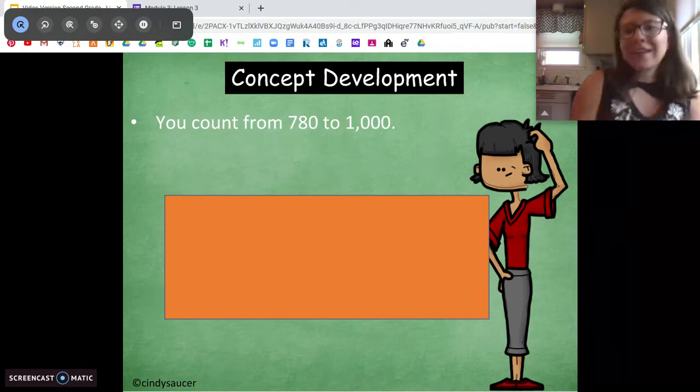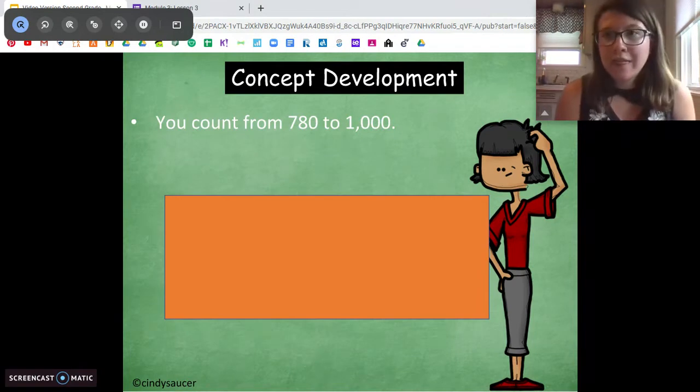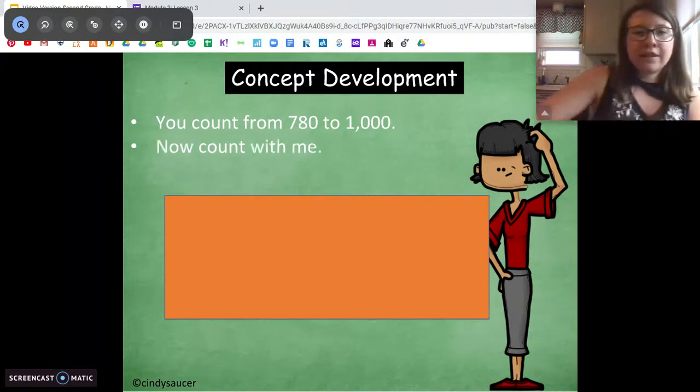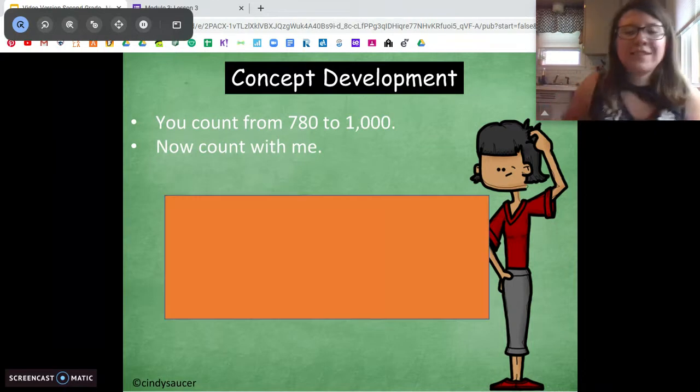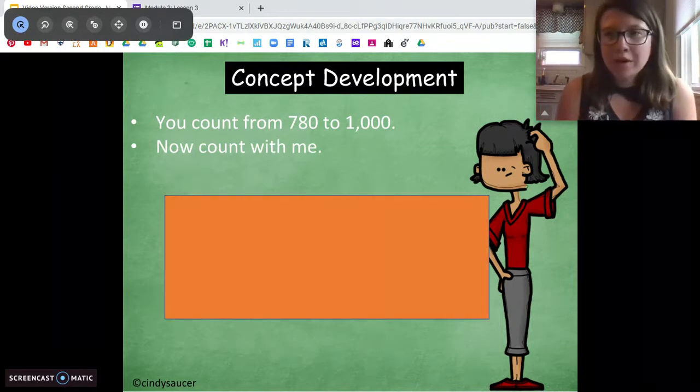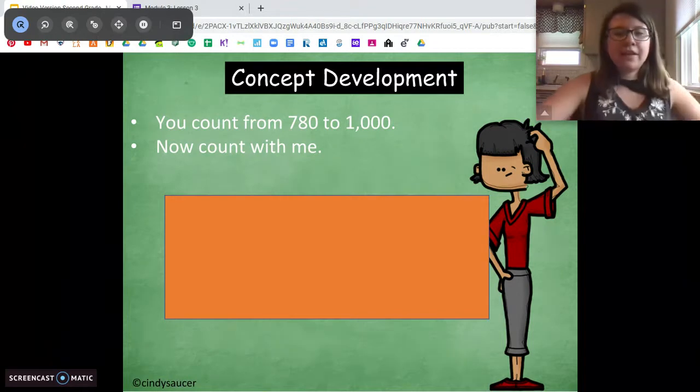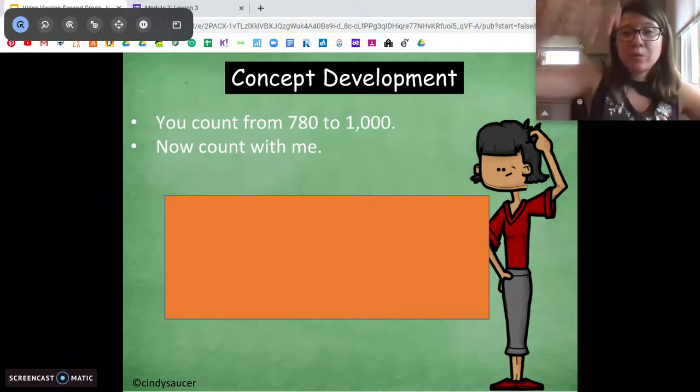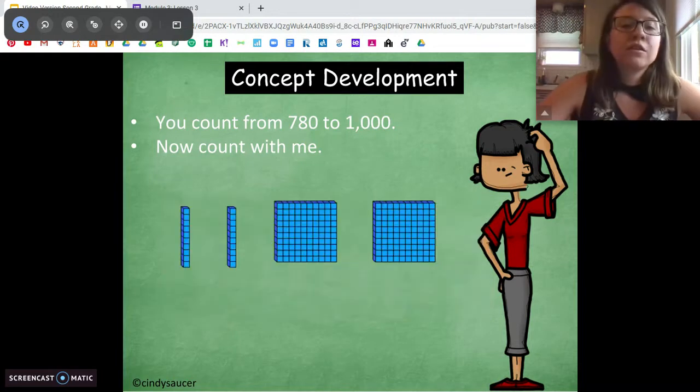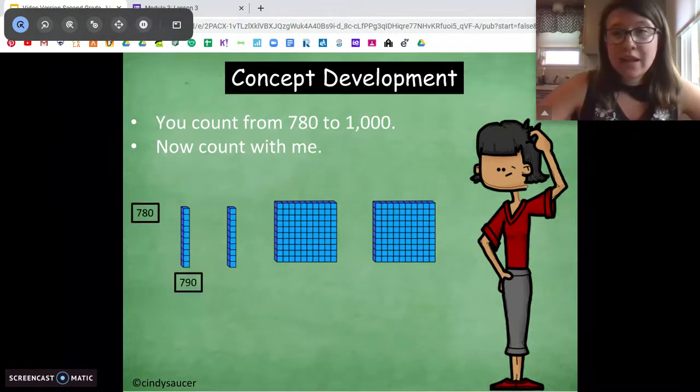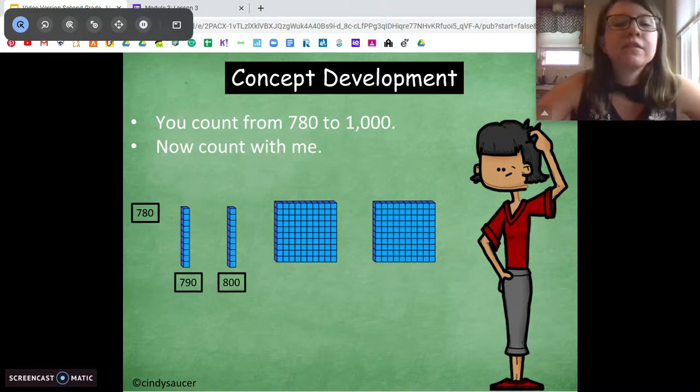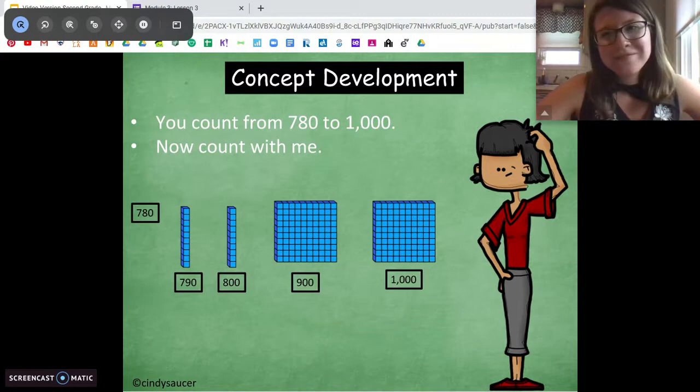All right, your turn. Count from 780 to 1,000. Again, use the trick that we've been going over in this lesson. On your own, start at 780. Start at 780, count to 1,000. Pause when you're ready to go over it. Or come back when you're ready to go over it. Ready? All right, we're at 780. So we want to get to that next 100 so we can count by hundreds. So we're going to count by tens. 780, 790, 800. Now we can count by hundreds. 900, 1,000. See? Super easy to get to 1,000 when we start counting by big numbers.